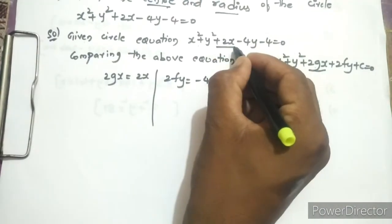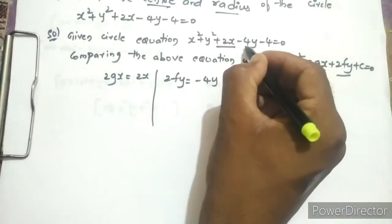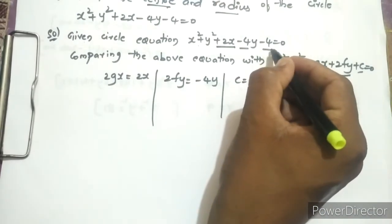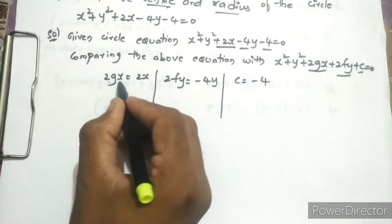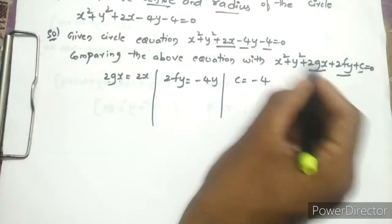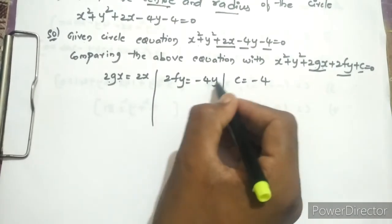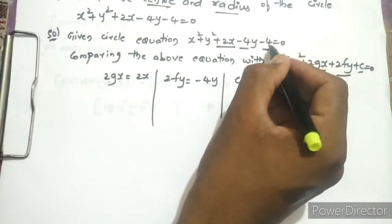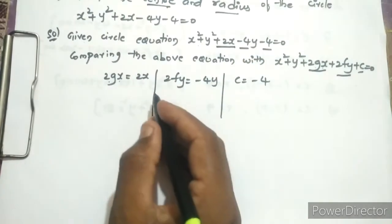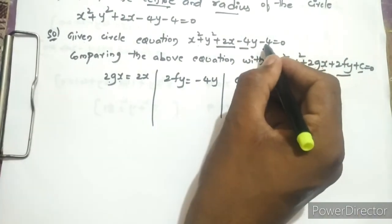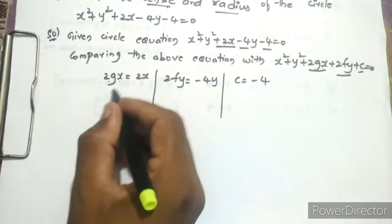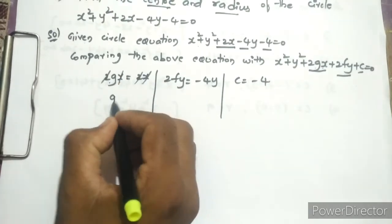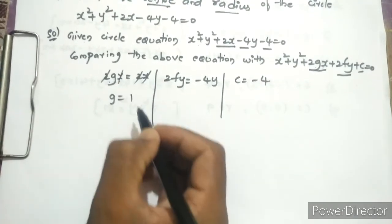Comparing both equations: 2gx becomes 2x, 2fy becomes -4y, and c becomes -4. So we write 2gx = 2x, 2fy = -4y, and c = -4. Canceling x values and the 2s, g value becomes 1.